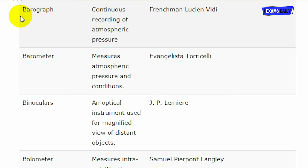Barometer is an instrument used to measure atmospheric pressure and conditions. Barometer was invented by Evangelista Torricelli. Binoculars is an instrument used for magnified viewing of distant objects. Binoculars was invented by J.P. Lemire.